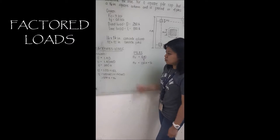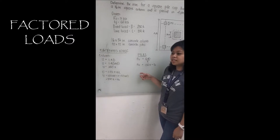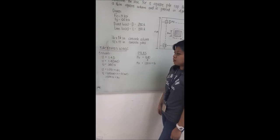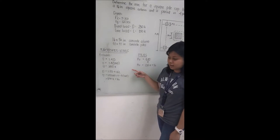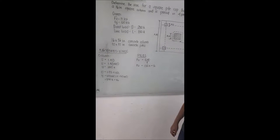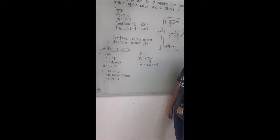Next we get the factored loads. We compared NSCP 2001 and 2010 for the load combination. From 2001, we got 350 kips and for the factored load of NSCP 2010, we get 540 kips.